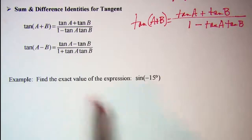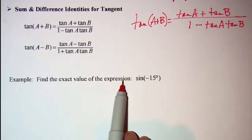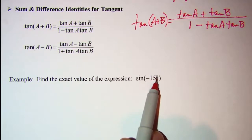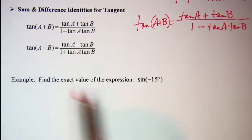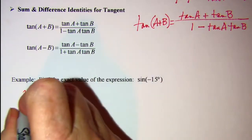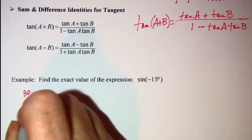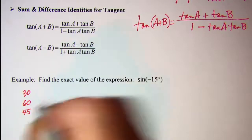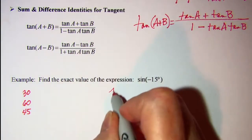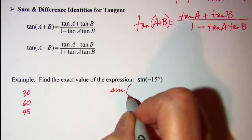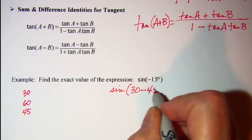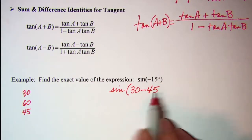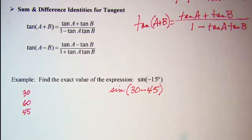I want to find the exact value of the expression sine negative 15 degrees. Since I have exact value here, I need to use one of my special angles. So those 30, 60, 45, which means I could rewrite this as sine of 30 subtract 45. And that will give me my negative 15 degrees there.